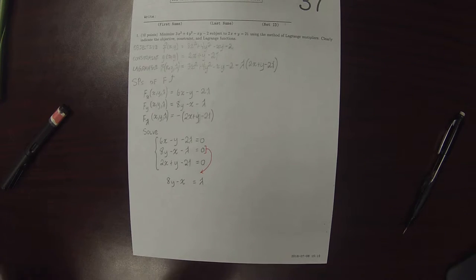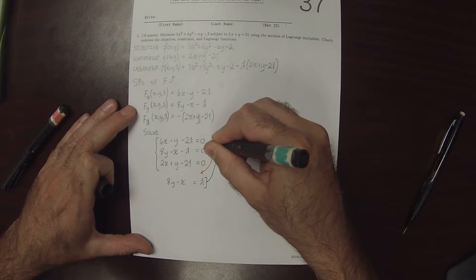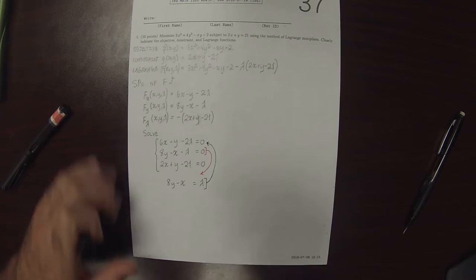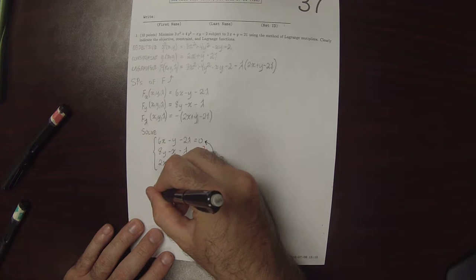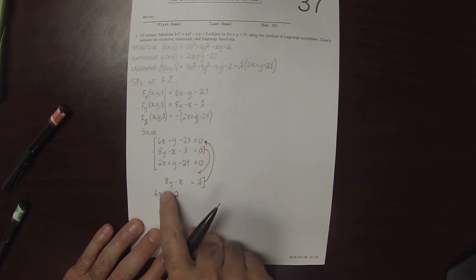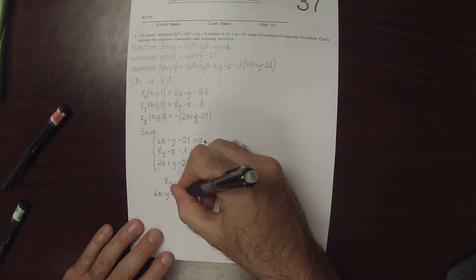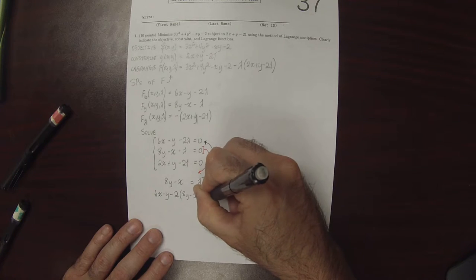So now I'll take this and plug it into the first equation. And that gives us that 6x minus y minus 2, and then now I'll plug in this lambda, 8y minus x, is 0.